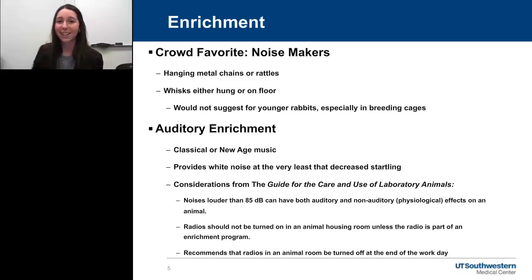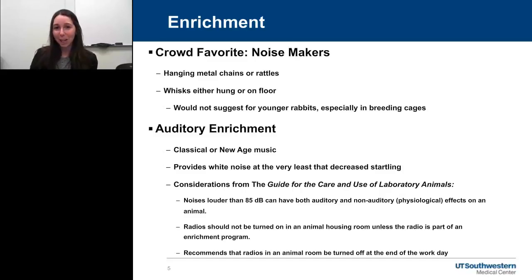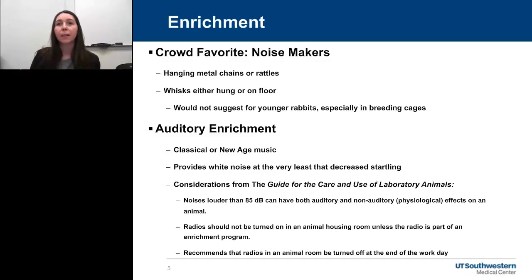Enrichment: crowd favorites by far were anything that made noise, especially metal items that would clang against the enclosure door. We used hanging metal chains and rattles — these were fixed to the cage door, easy for cleaning, becoming a permanent fixture that went through cage washing. Wisks were another great item — I bought them from a chef supply website, very inexpensive. They could be hung on the enclosure door or placed on the floor, and were great as loose hay feeders. The rabbits loved to nudge them around or jingle them against the cage door.